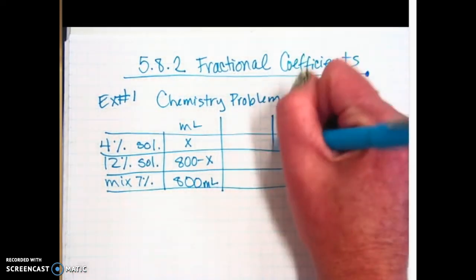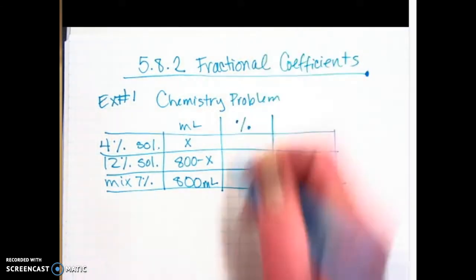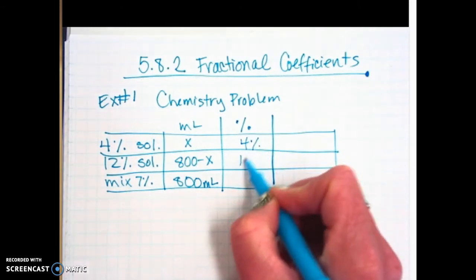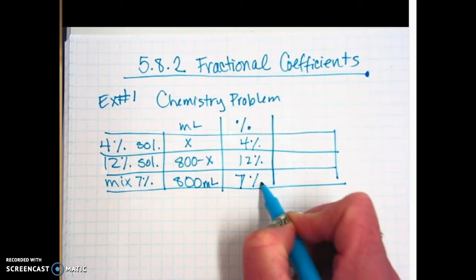In the next column, we're going to write the percent. So this one's 4, this one's 12, this one's 7.